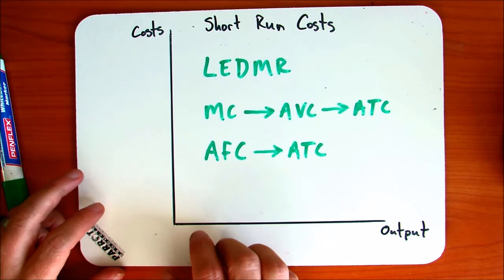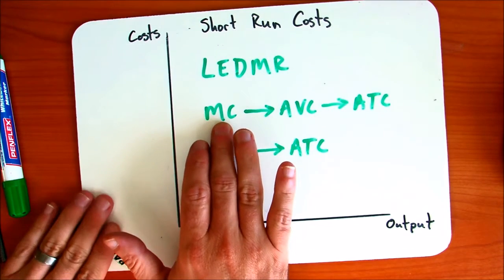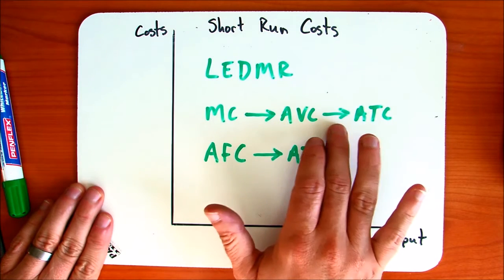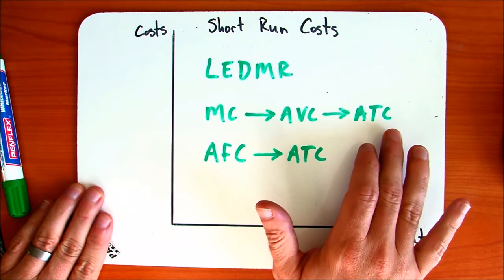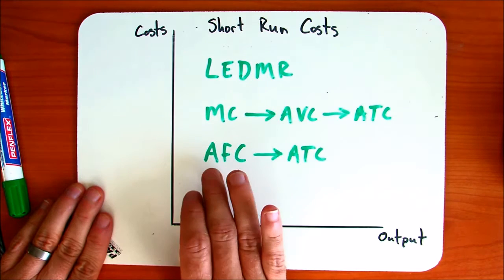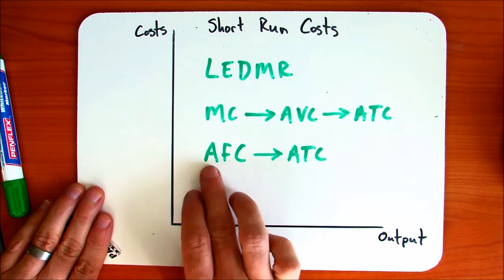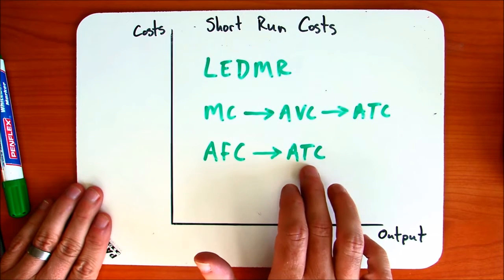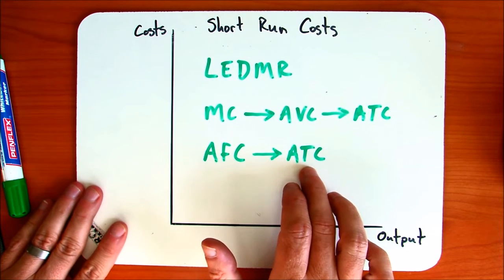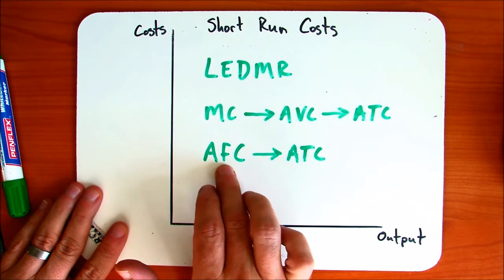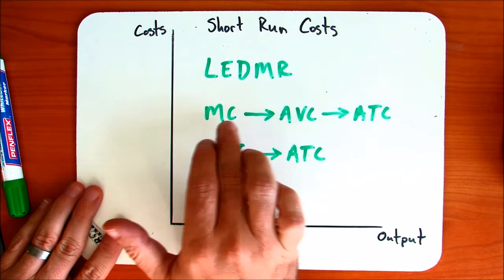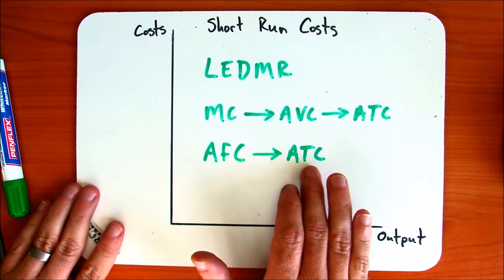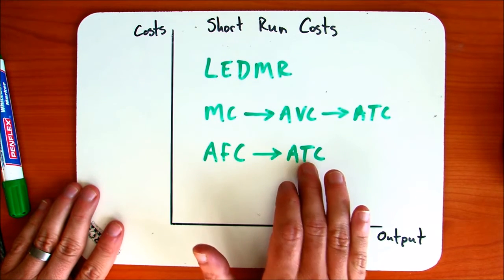The first step will be explaining how marginal cost affects average variable cost (AVC), and then affects average total cost. Then we'll look at how average total cost is also affected by AFC. So when you look at the overall shape of ATC, it's important to see that it's being affected by AFC, and then by AVC as well, which is being affected by MC. It's our conclusions about average total cost that are our most important.